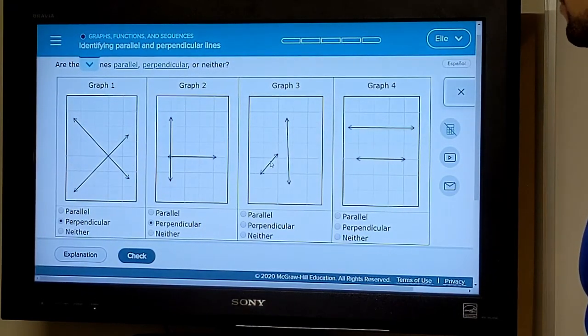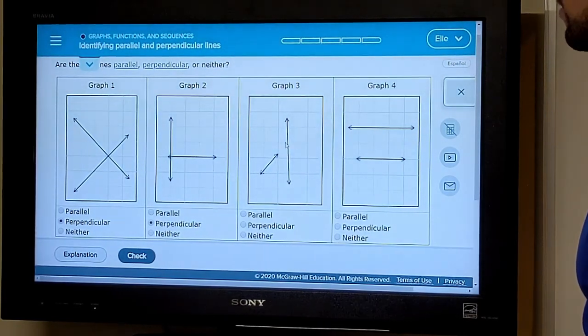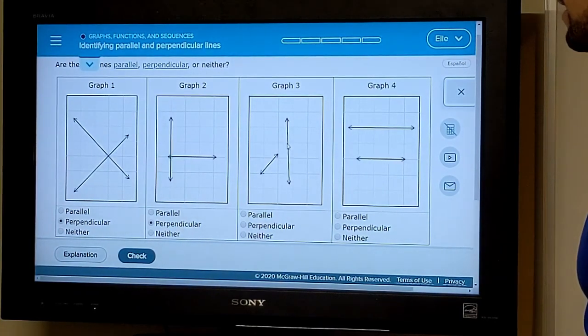These two don't intersect in the picture, but lines extend forever in both directions. So they will intersect here if we were to extend this line. You can see they would intersect at non-right angles. So these are neither.